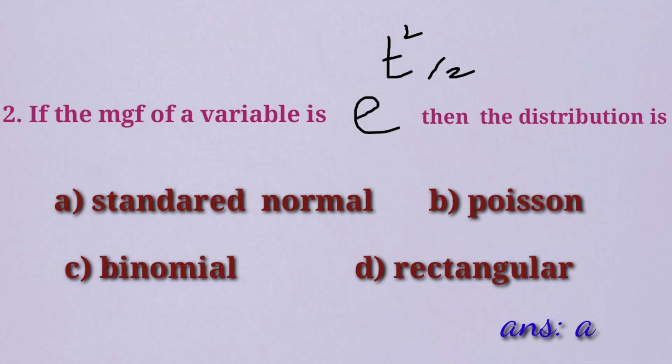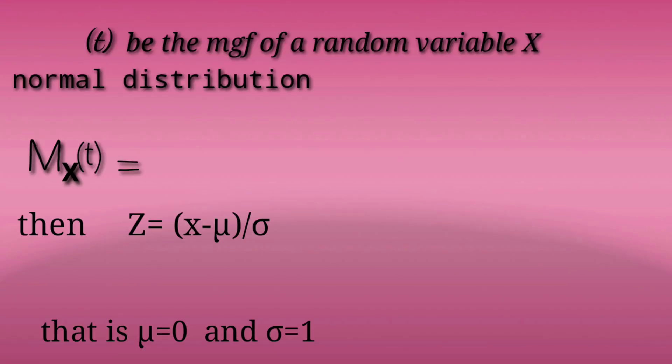In all distributions we are familiar with, consider if X is a Normal Random Variable. The Moment Generating Function, Mx of t, is equal to e raised to mu t plus half t square sigma square.